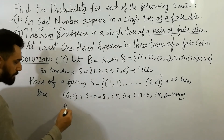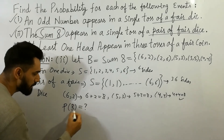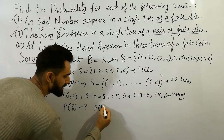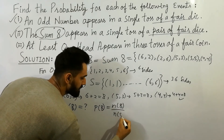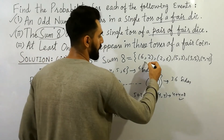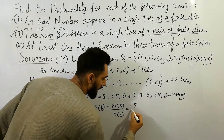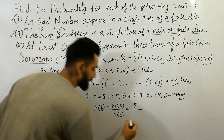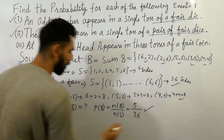Now, the main point is to find the probability of B. Probability of B is equal to number in B divided by number in sample space. So what are the numbers in B? One, two, three, four, five — there are five outcomes. Divided by sample space of 36 sides, we put here 36. So the probability of B equals 5 divided by 36.